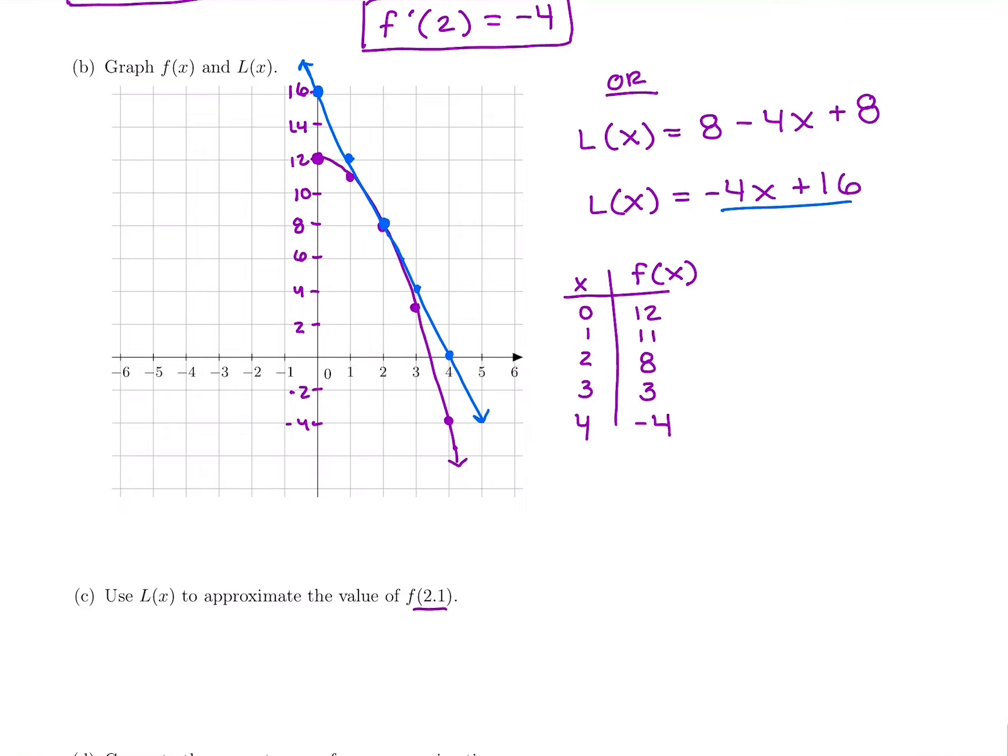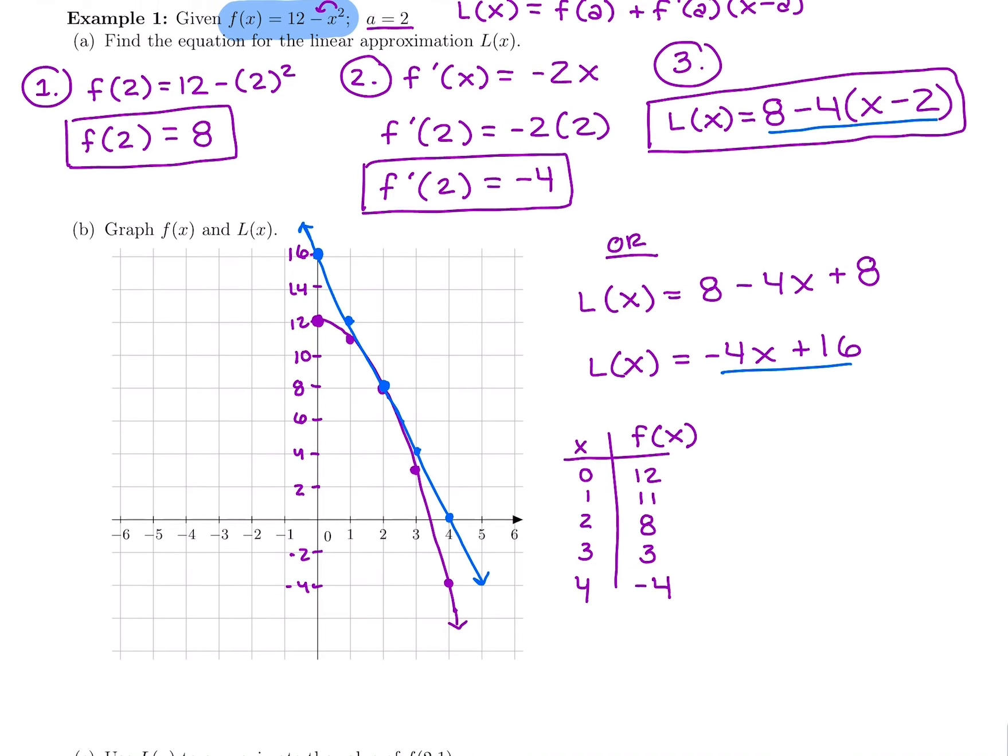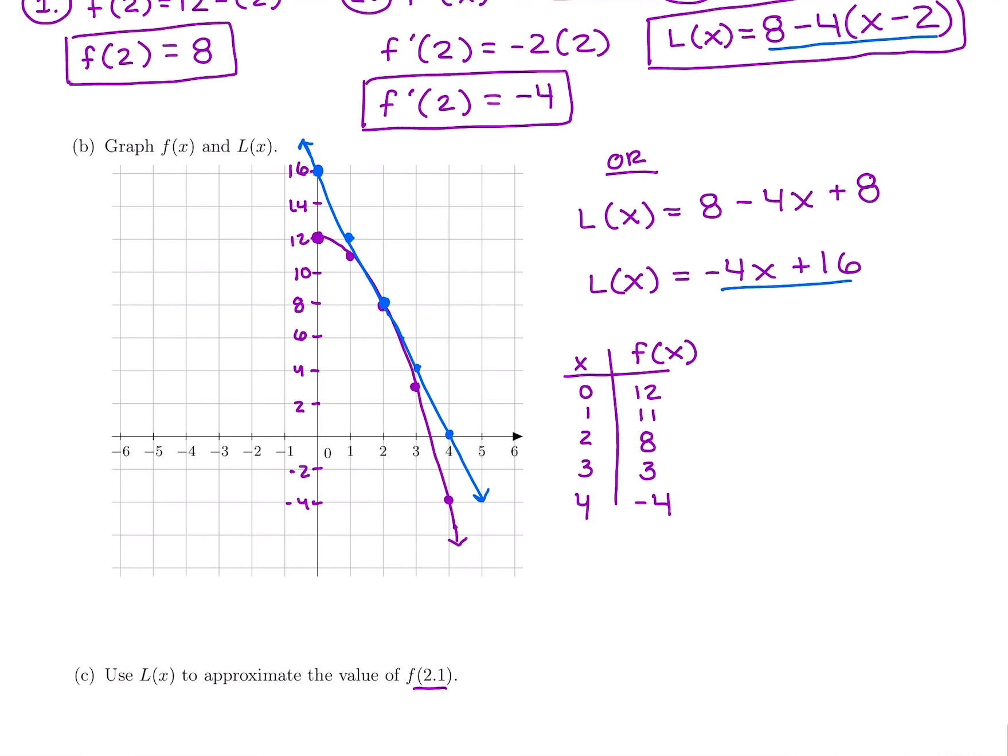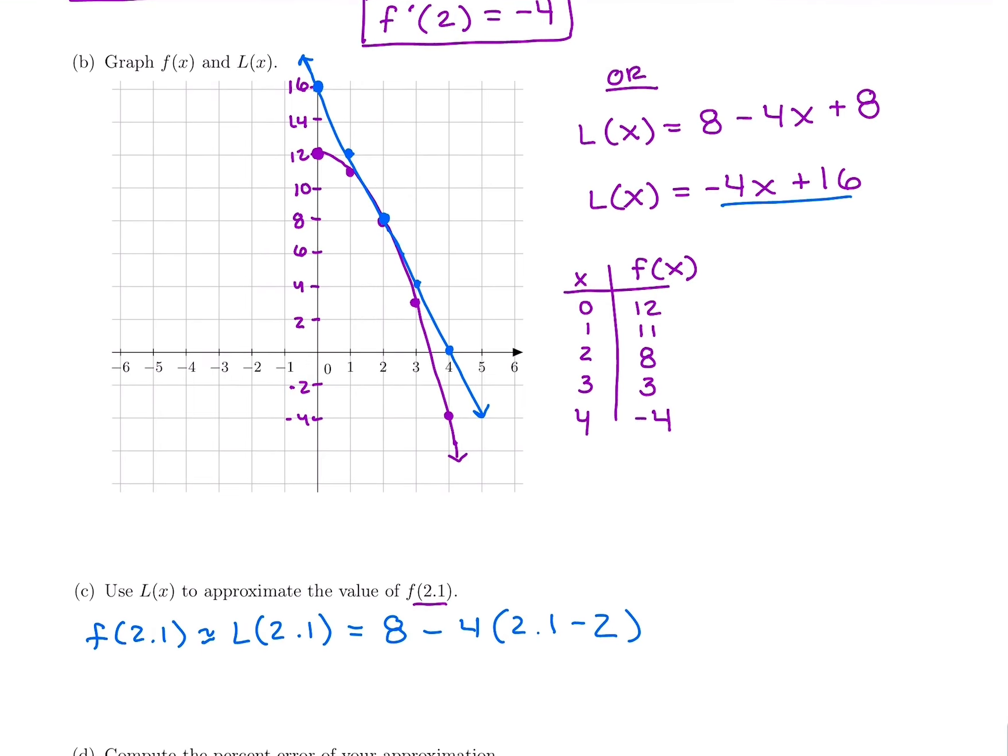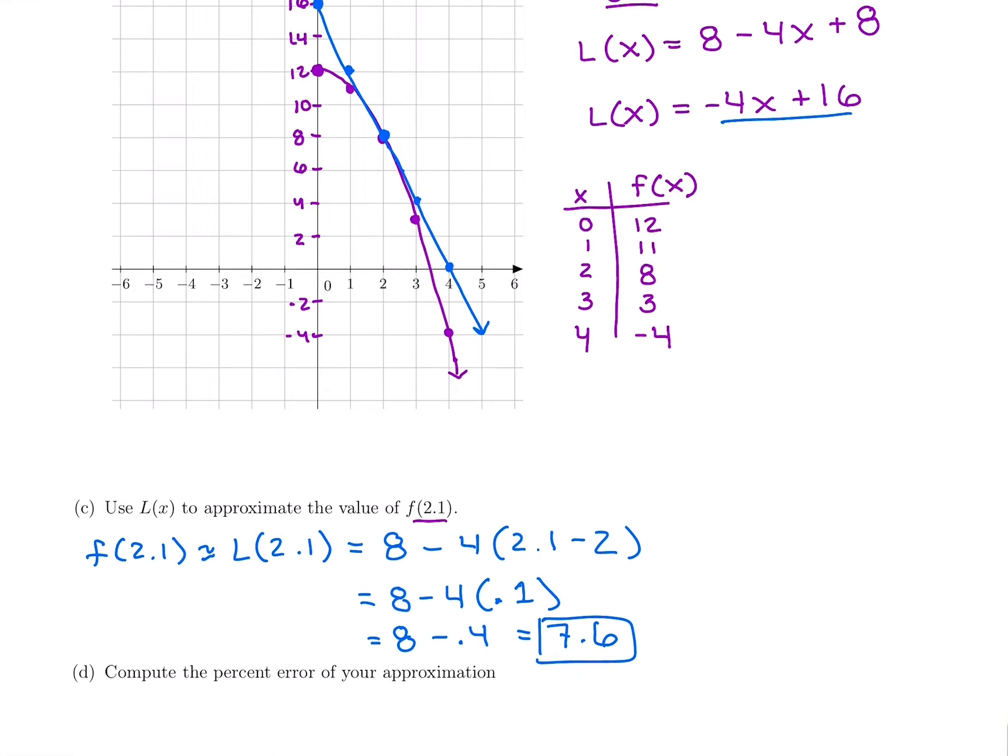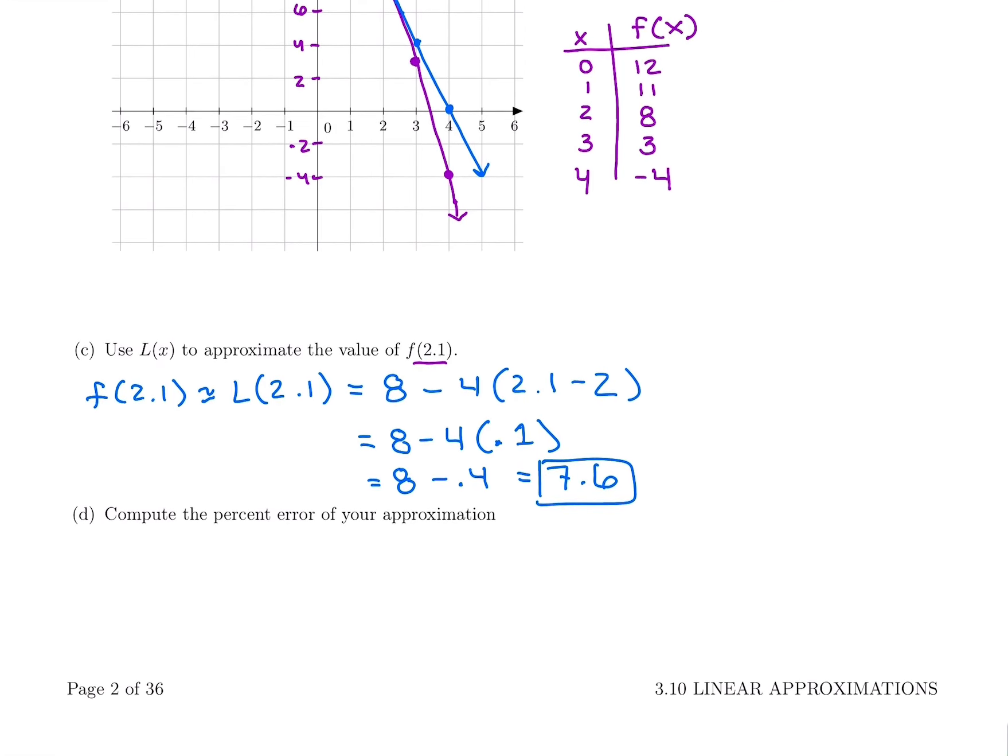Let's figure out the value for 2.1. We might be able to do this one in our head, 12 minus 2.1 squared, but it would be much harder than just plugging into our linear approximation. So f(2.1) is going to be approximately the same thing as L(2.1). Their graphs are very close around 2. So I'm going to plug into 8 minus 4 times (2.1 minus 2), replacing that x in the linear approximation with a 2.1. So we have 8 minus 4 times 0.1. So 8 minus 0.4 gives us our linear approximation of 7.6.